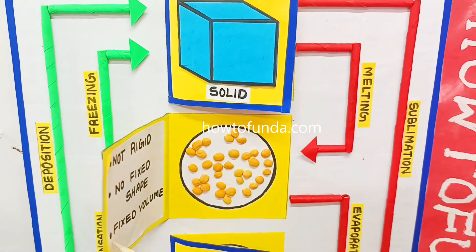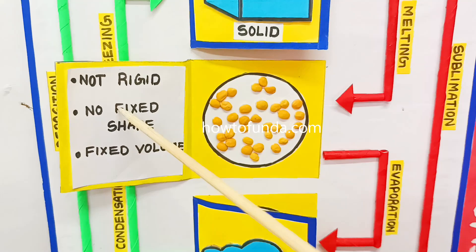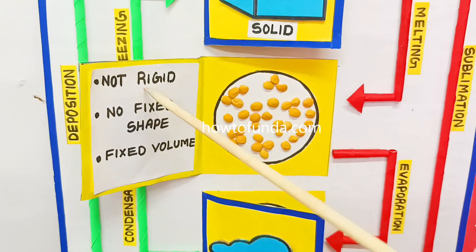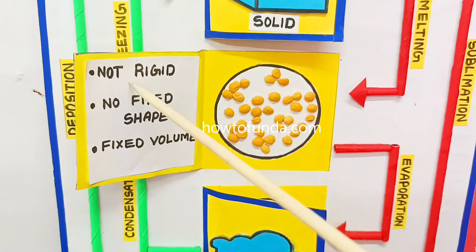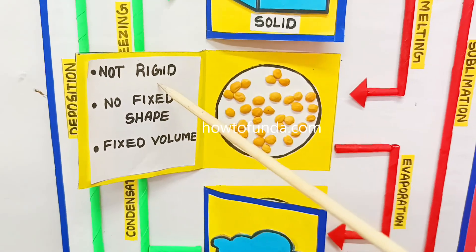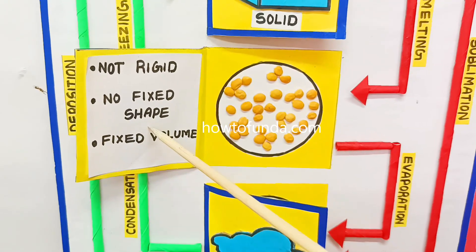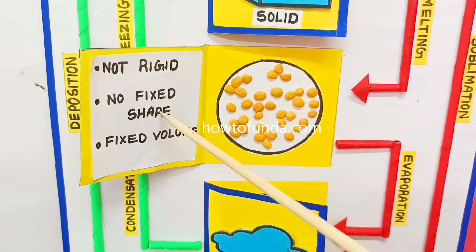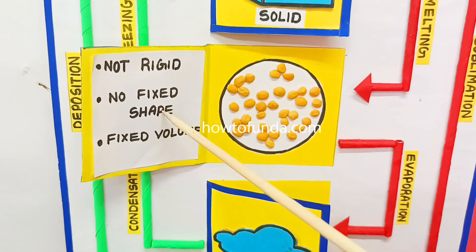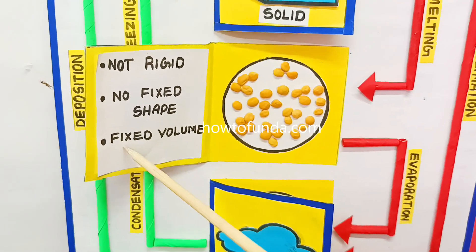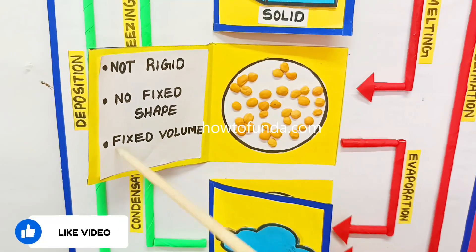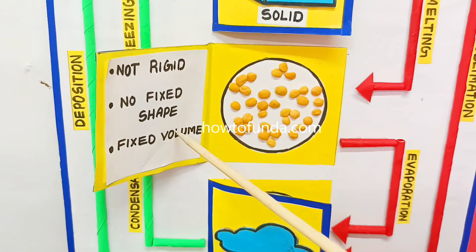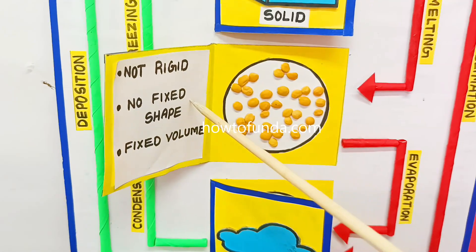When it comes to liquid state, the example for liquid is milk. In this case, the milk doesn't have any rigidity as well as no fixed shape, and it can take its own shape whenever we transfer the milk into any other container, but it will have fixed volume. That is an example for liquid state.